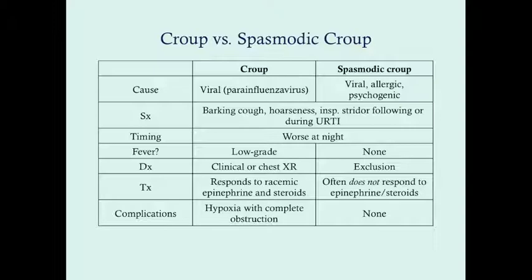What's important and what really points you towards spasmodic croup more than anything is a repeated history — recurrent croup. A patient who comes in two or three times a year for croup, or whose parent reports episodes of barking cough and hoarseness that go away pretty quickly, is very typical of spasmodic croup. It's more recurrent and doesn't last as long — whereas croup tends to last about a week, spasmodic croup may only last a couple of days at most.